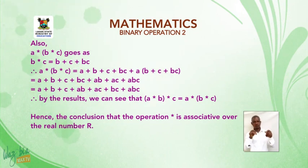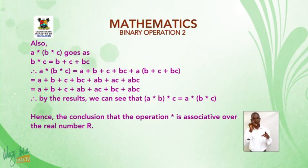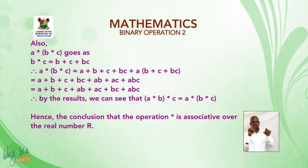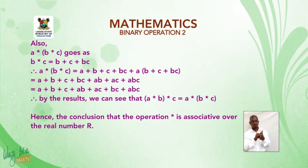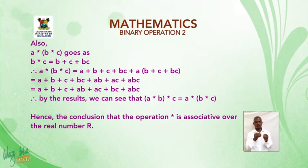By the result, we can see that (a★b)★c = a★(b★c). Hence, the conclusion that the operation star is associative over the set of real numbers ℝ.